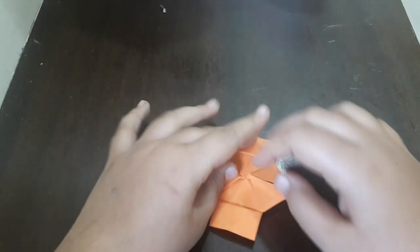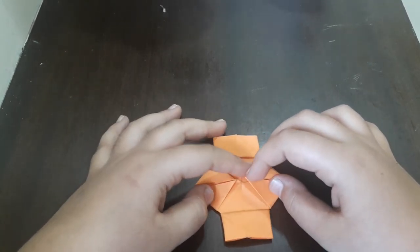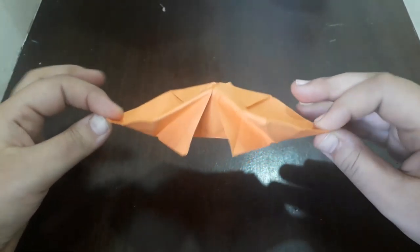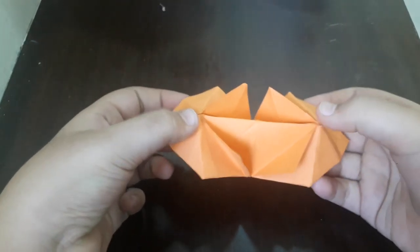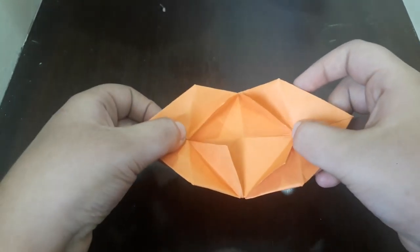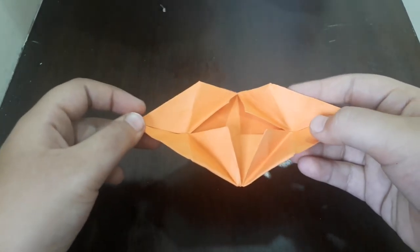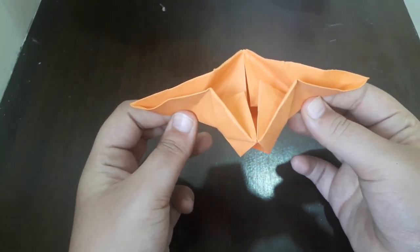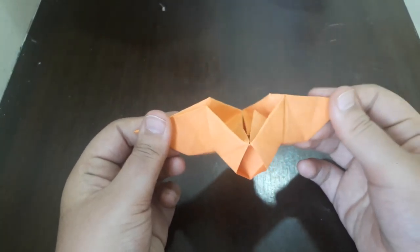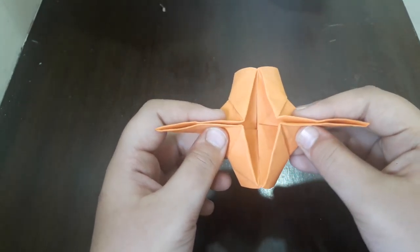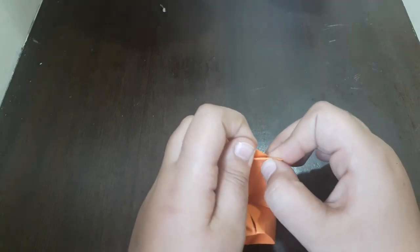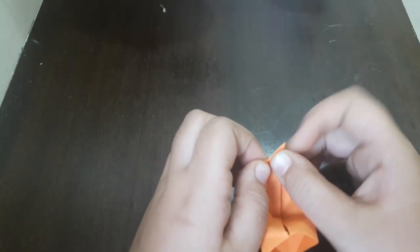After doing this, you can see the shape like this. Take the other two sides and pull it. After pulling, turn it back. Press these both down. After pressing, you'll get like this hole here. Keep it and make folds over here.